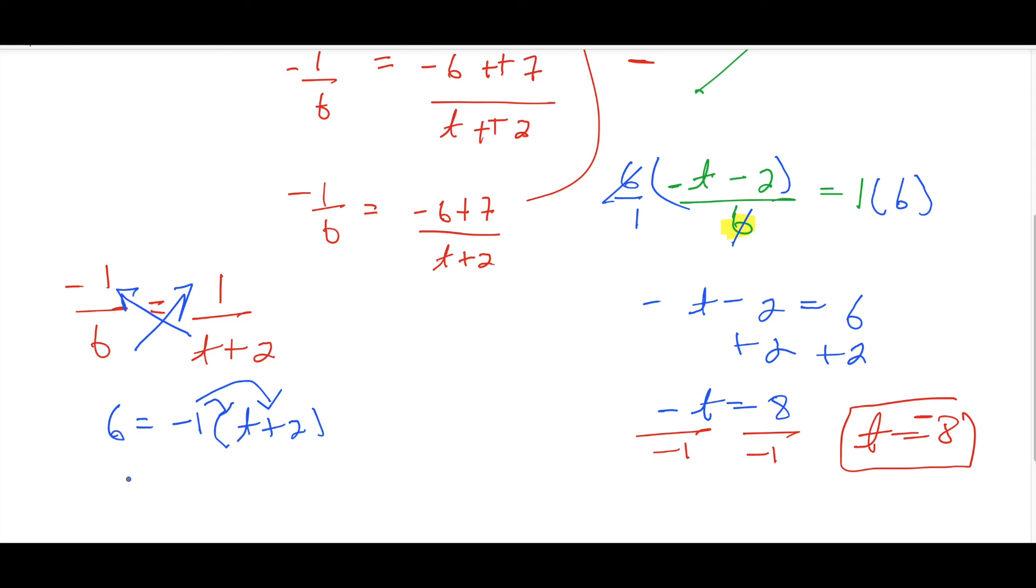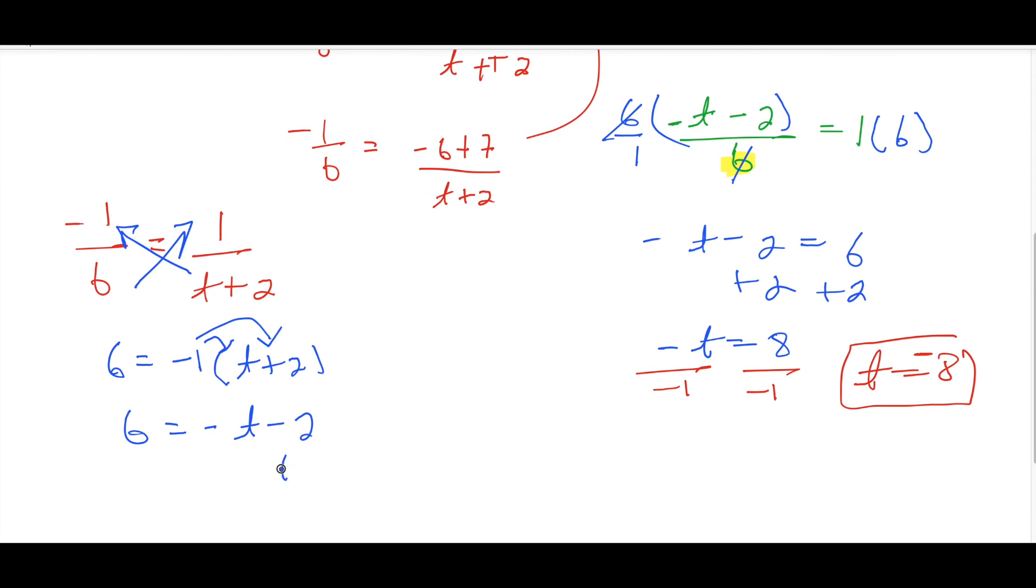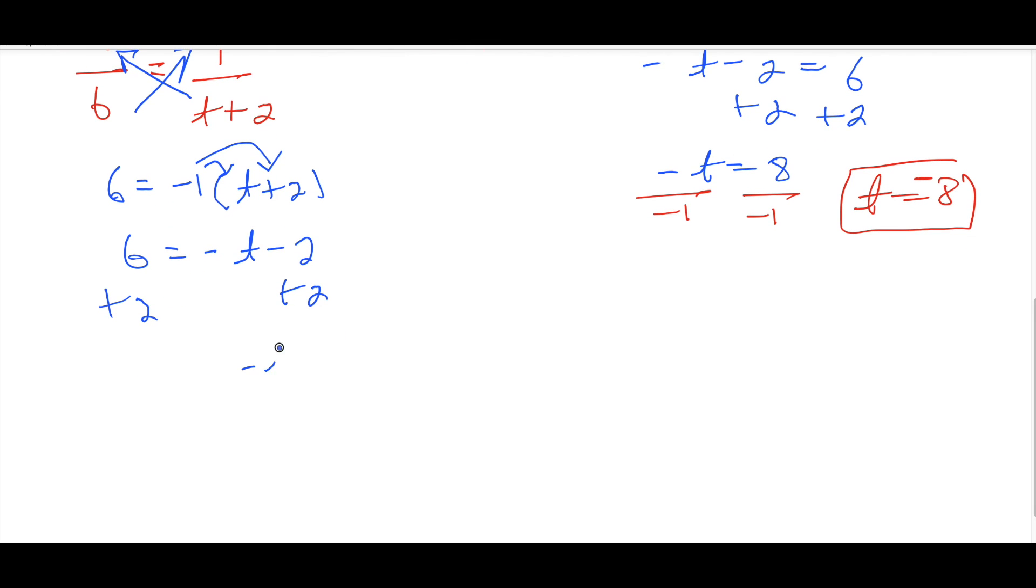So 6 equals -t minus 2 plus 2 plus 2. -t equals 8. Divide by -1. t equals -8. Get it? Mm-hmm. Okay.